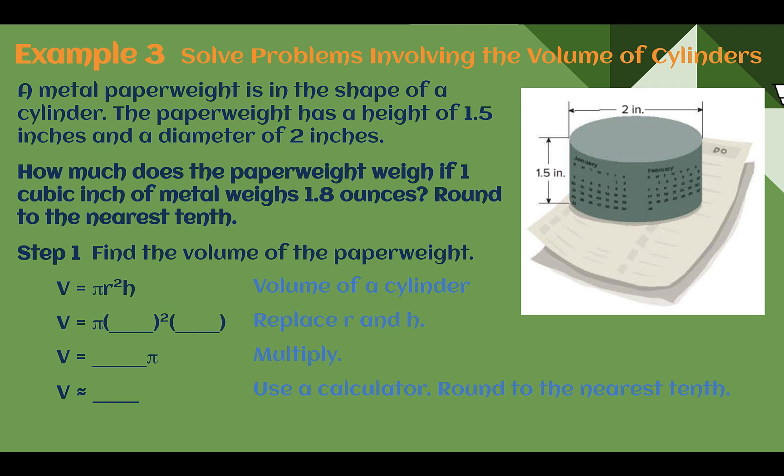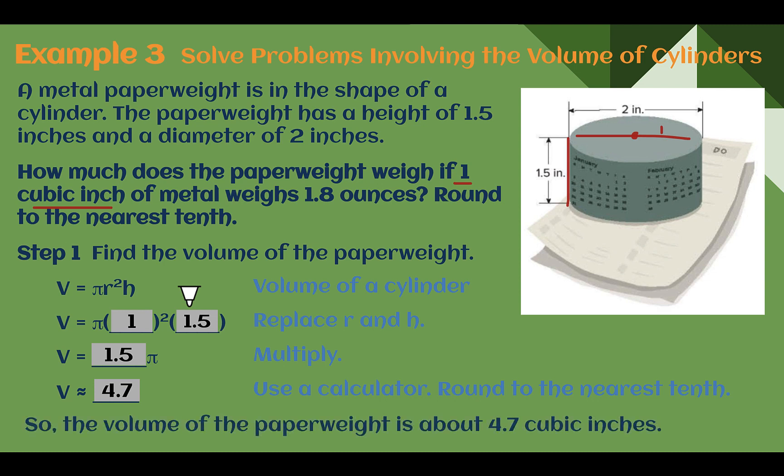Example 3. Solve problems involving the volume of cylinders. A metal paperweight is in the shape of a cylinder. The paperweight has a height of 1.5 inches and a diameter of 2 inches. How much does the paperweight weigh if 1 cubic inch of metal weighs 1.8 ounces? Round to the nearest tenth. So first let's find the volume of our paperweight. This will help us find how much material the paperweight is made out of. And then once we figure that out, we can multiply it by 1.8 since that's what it weighs for 1 cubic inch. So 1 unit of volume weighs this amount. So our volume, our height is 1.5. The diameter is 2. So I don't want the diameter. I want the radius. Radius is 1. Plugging it in. Height 1.5. Multiplying this out. I end up with 1.5π. And using a calculator, I get about 4.7. So my volume is about 4.7 cubic inches.